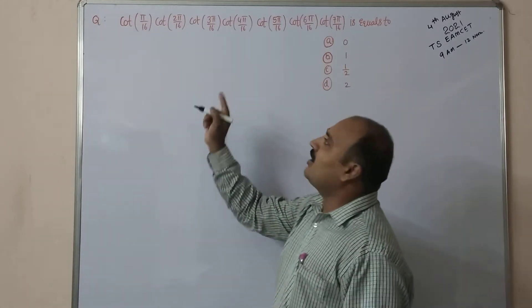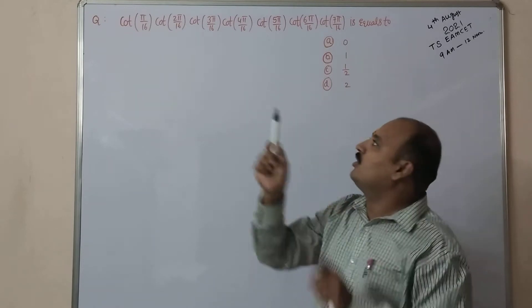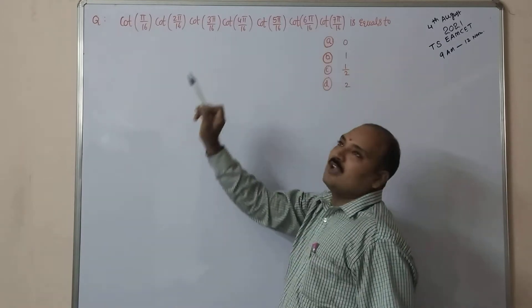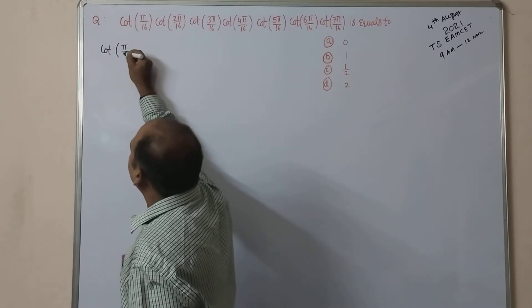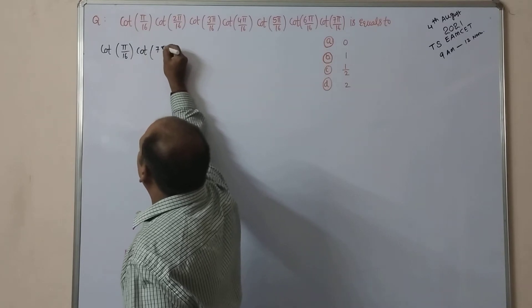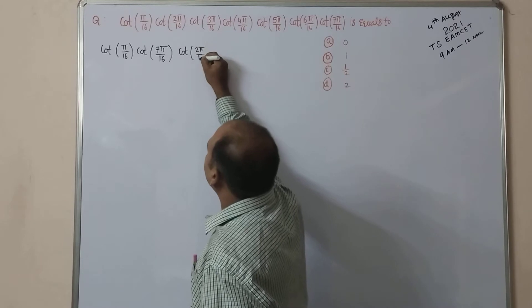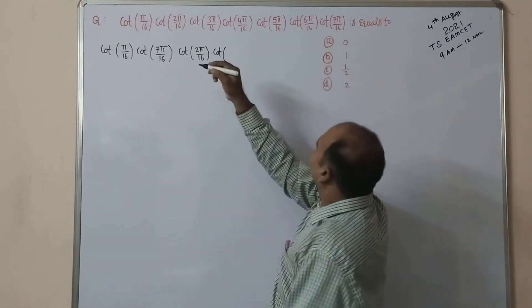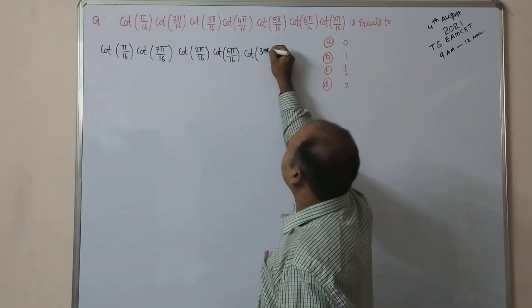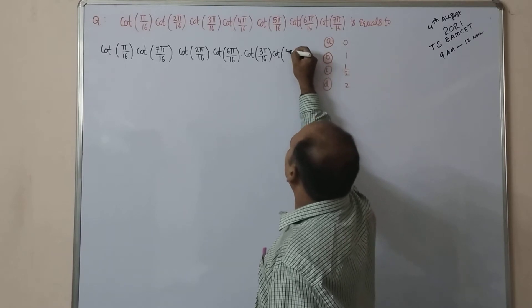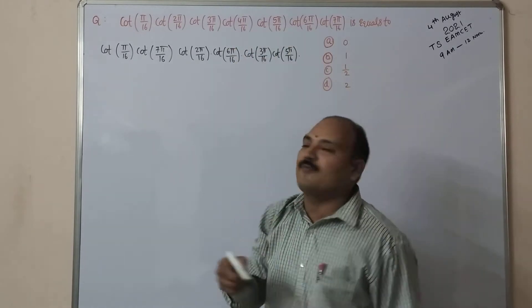Let us have a discussion. The question is cot(π/16) × cot(2π/16) × cot(3π/16) × cot(4π/16) × cot(5π/16) × cot(6π/16) × cot(7π/16). The value - even in the boards also this type of question is very important. While writing the logic, you remember here π/16 and 7π/16 if you add, 8 will come. So π plus 7π equals 8, similarly 2π plus 6π, like this 3π plus 5π - the pair you have to write, that's the only logic here.